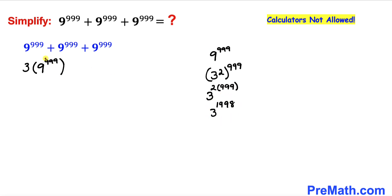So I'm going to replace this 9^999 by this 3^1998. Let me write down 3 times 3^1998.